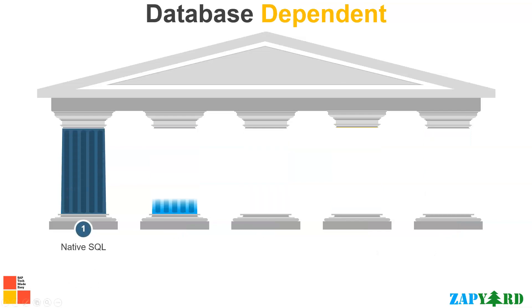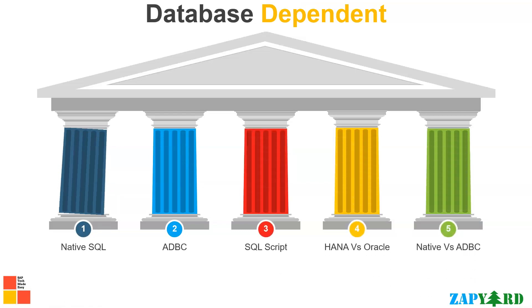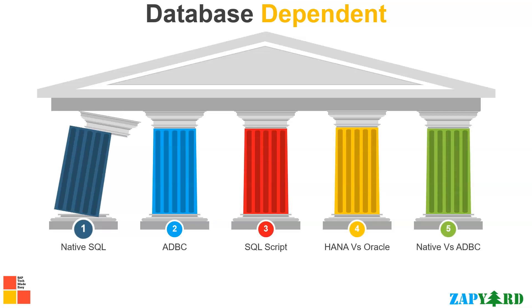Next, we will discuss database-dependent concepts and technologies in SAP HANA. We will cover native SQL and the improvement of native SQL in ADBC, which is ABAP Database Connectivity. We will see the important similarities and differences between HANA and Oracle, and learn how ADBC is better than native SQL.